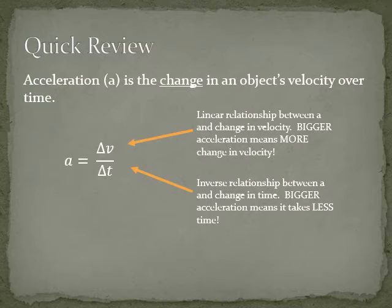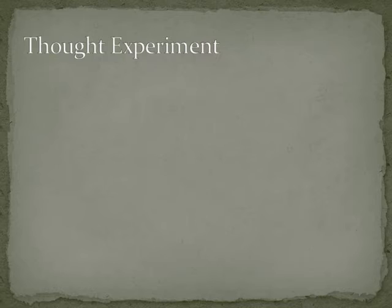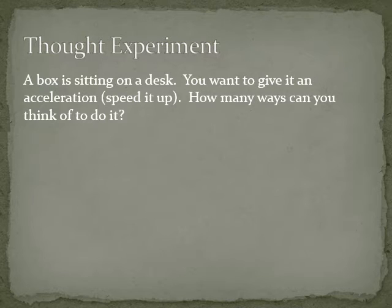Let's do a quick little thought experiment to try to figure out the why that I mentioned earlier. Why do objects accelerate? If you imagine you have a box sitting on a desk and you want its velocity to change, you want to speed it up and make it do something more interesting than just sit there, how many different ways could you make that box change speed?